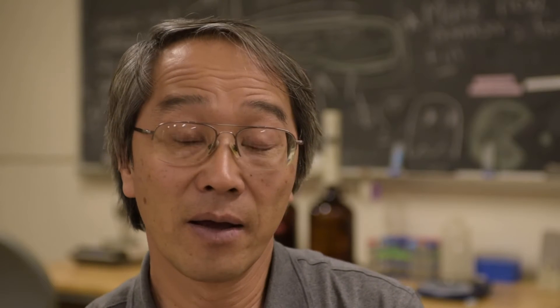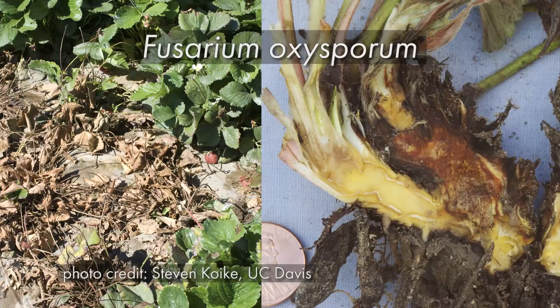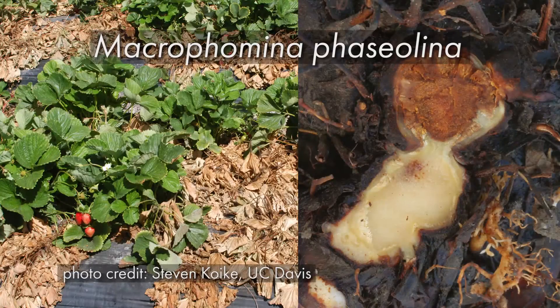There are three major soil-borne diseases for strawberries in California. Fusarium wilt is caused by Fusarium oxysporum. Charcoal root rot is caused by Macrophomina phaseolina. Verticillium is probably the number one most problematic soil-borne disease.